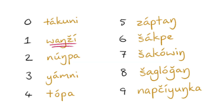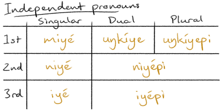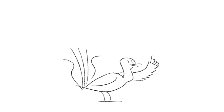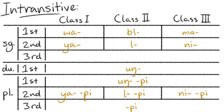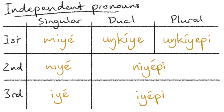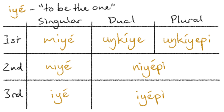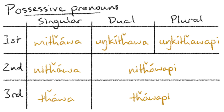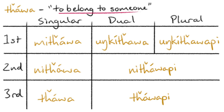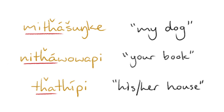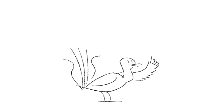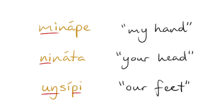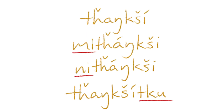Pronouns in Lakota rarely ever appear independently, but whenever they do, they are usually used for emphasis, since most of the time they appear on verb conjugation. Independent pronouns are technically conjugations of the verb 'to be the one.' There are possessive pronouns as well, which can appear independently as conjugations of the verb 'to belong to someone,' or as pronominal prefixes attached to nouns. A distinction is also made between alienable and inalienable possession, the latter being used for things like body parts and kinship terms.